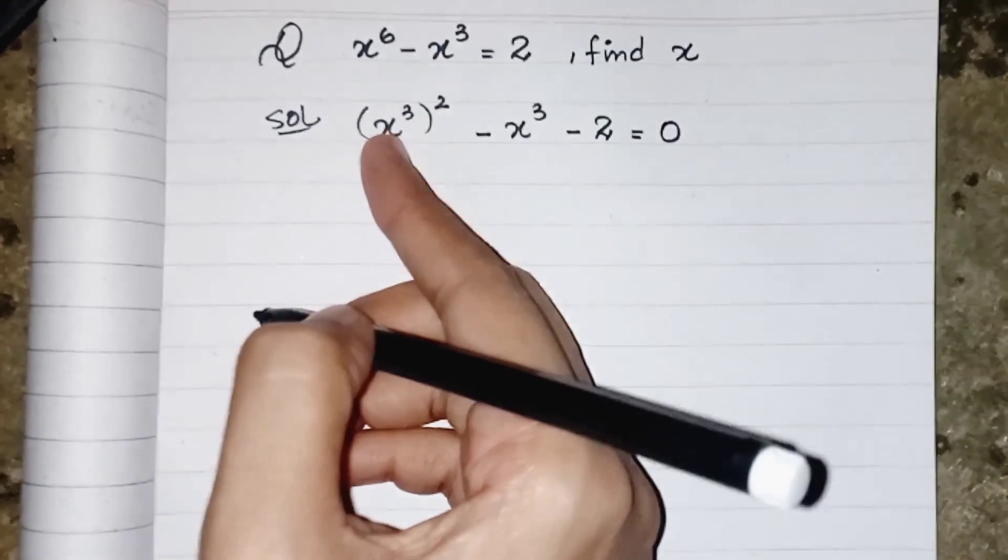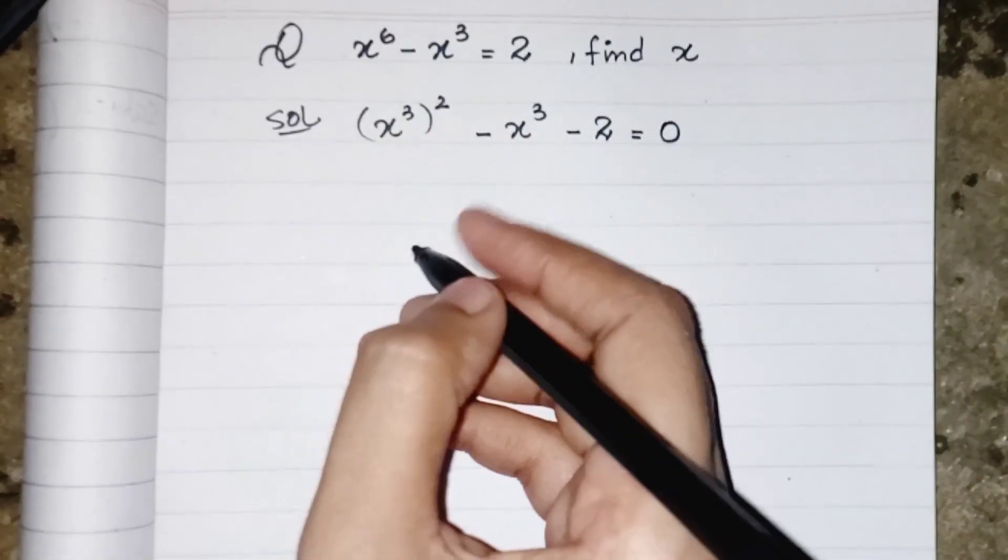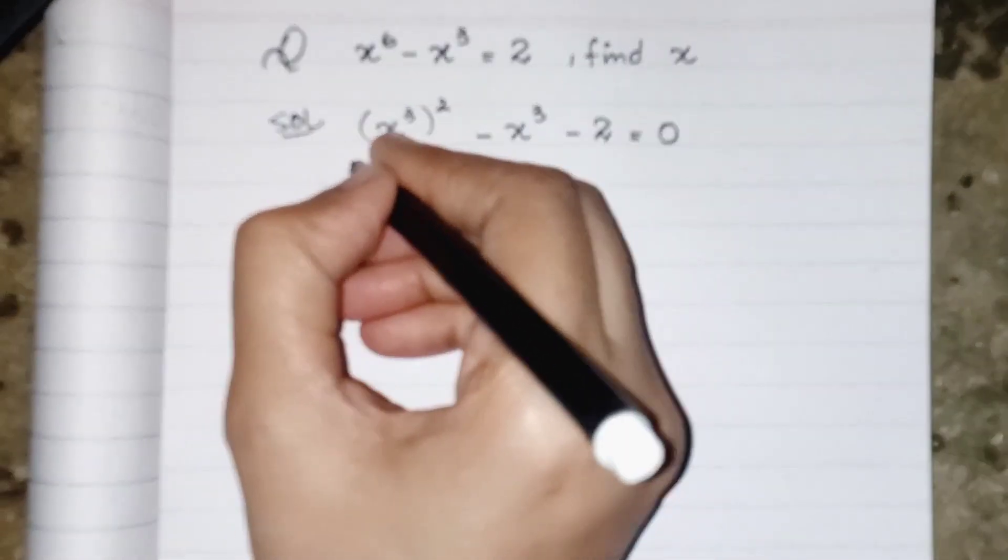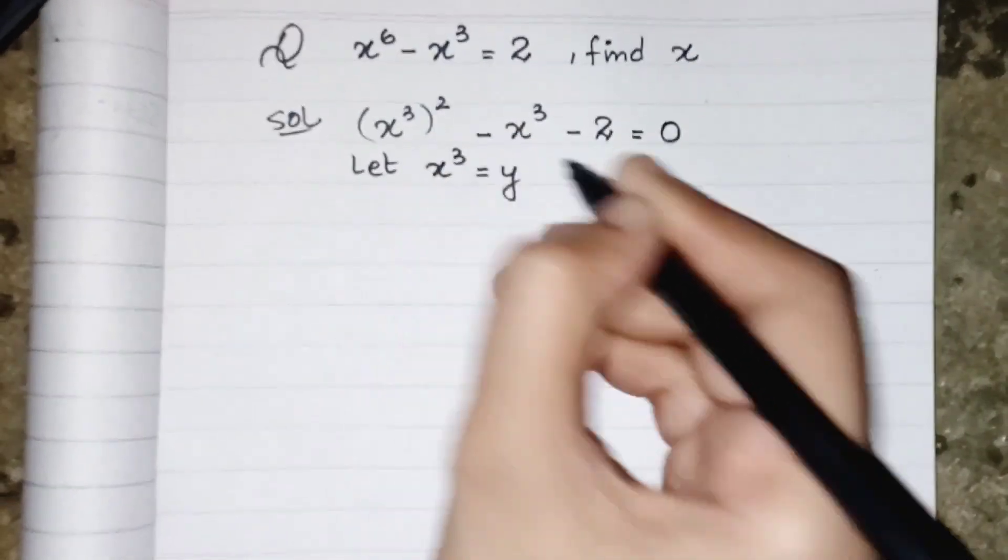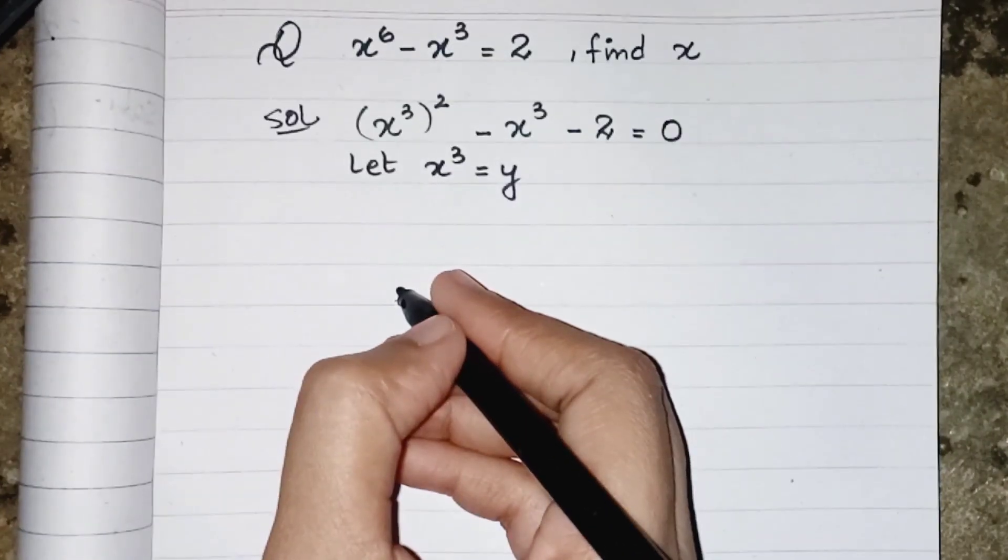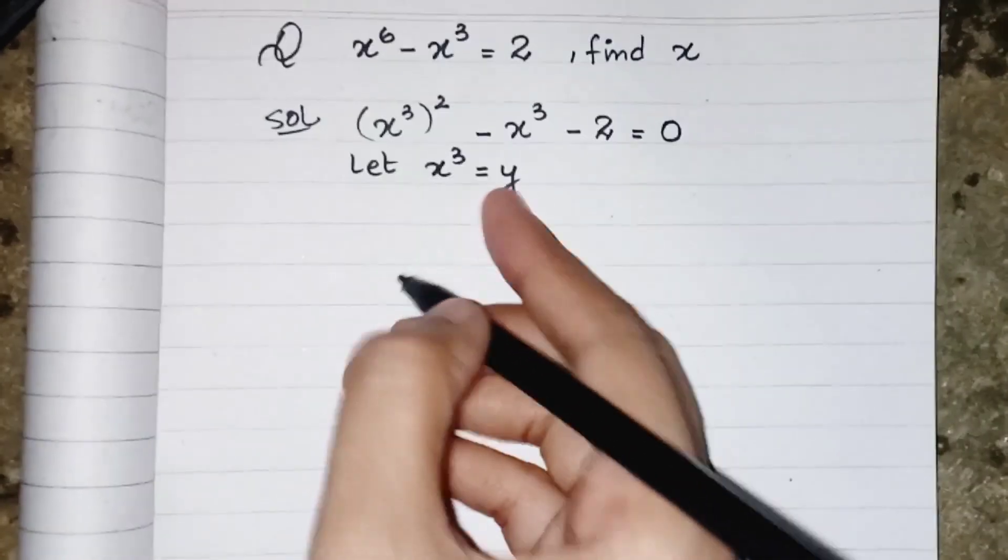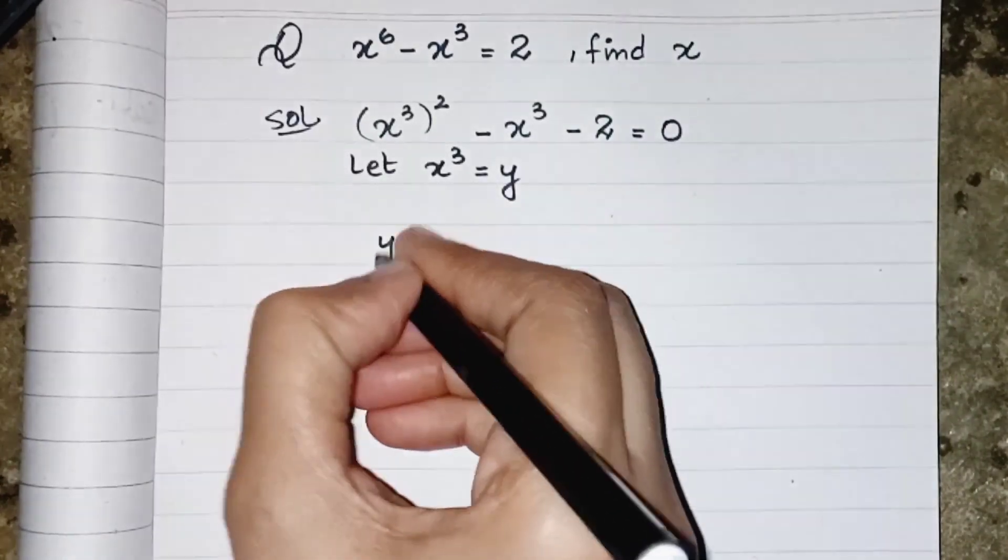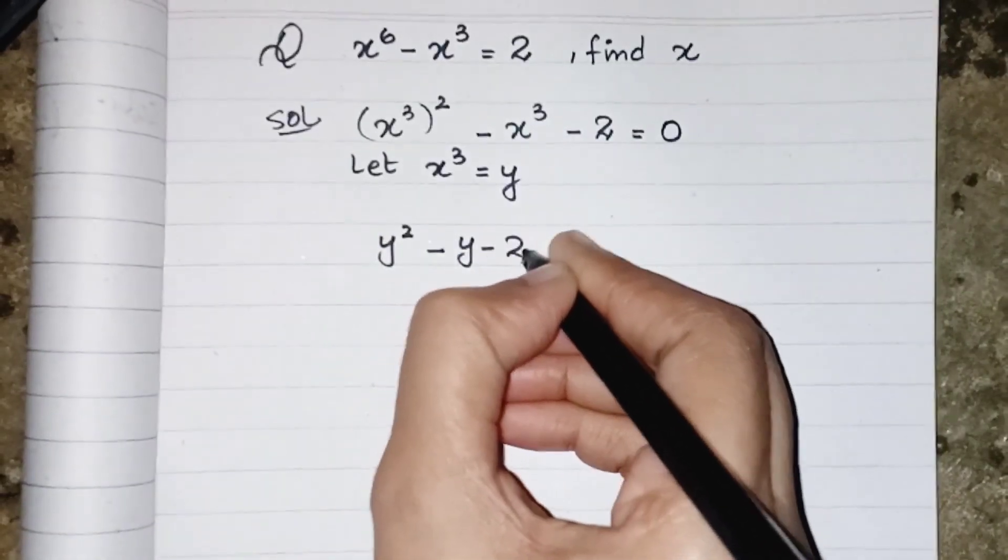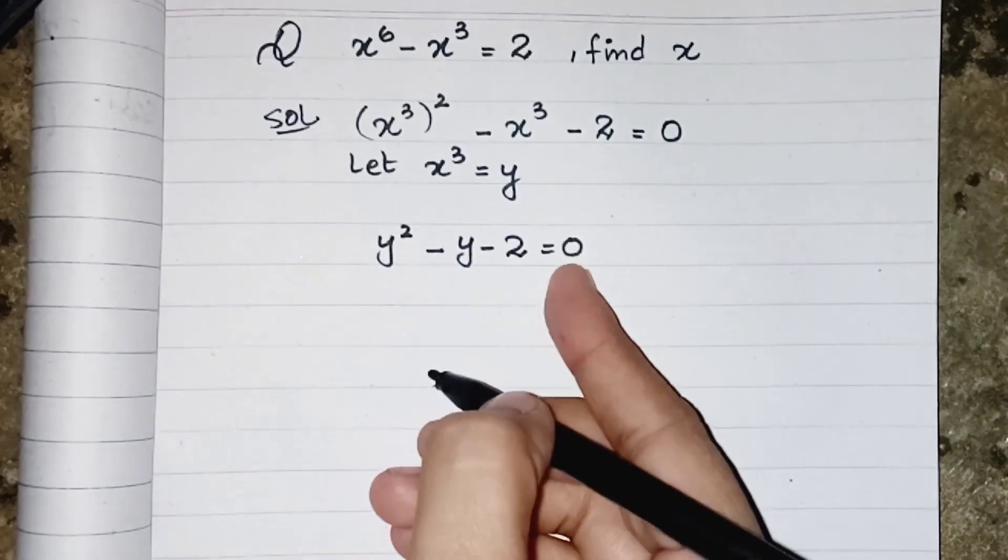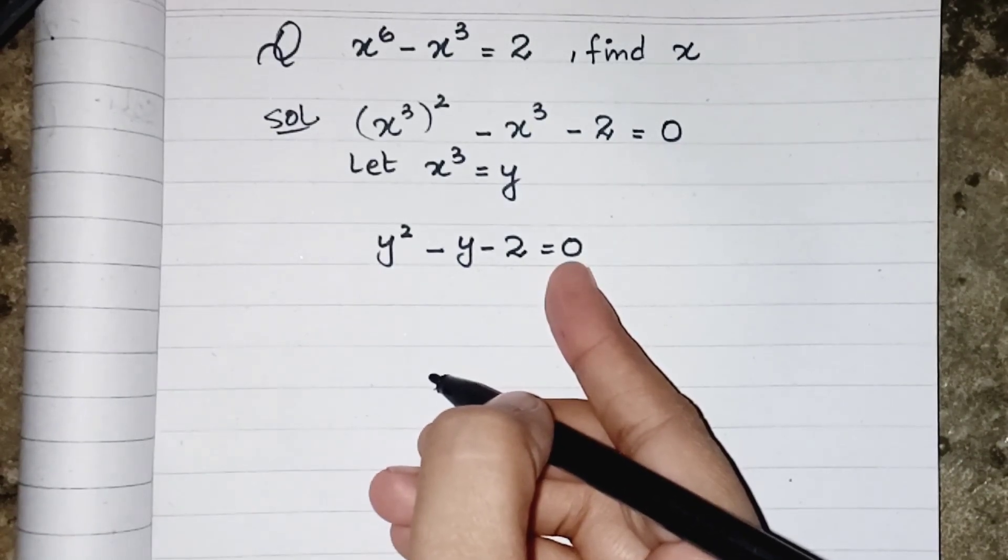Now we see in both terms we have x power cube, so we can say that let x power cube be substituted by y. So in place of x power cube I will write y. So now my equation is y square minus y minus 2 equals to 0, which is a quadratic equation.